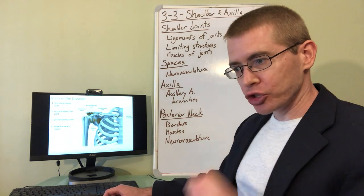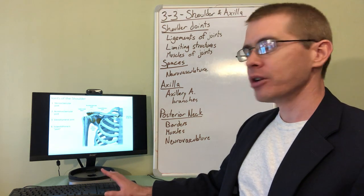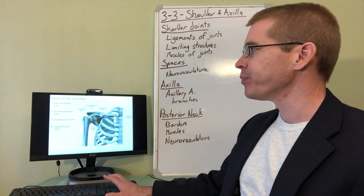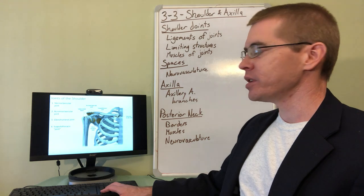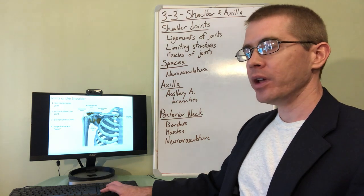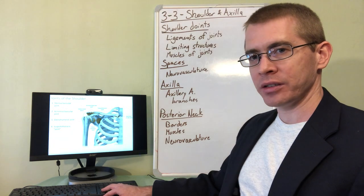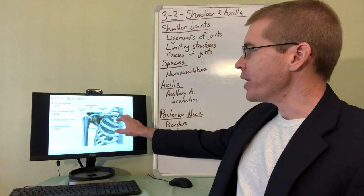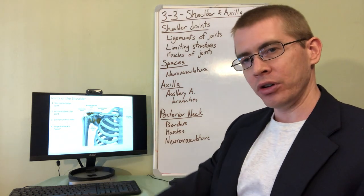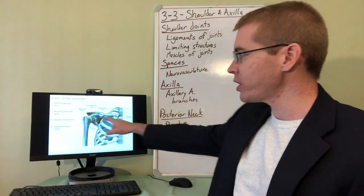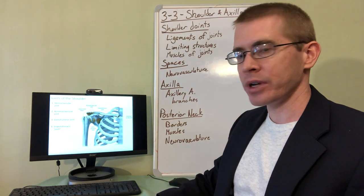So the shoulder has a number of joints to it. It's not just the glenohumeral joint, which we think of primarily, but there are two or three other joints. The sternoclavicular joint is actually the only point at which the upper limb articulates with the axial skeleton. That's why clavicular fractures are so common with falls with outstretched arms, because all of the force of that fall has to go through the clavicle because that's the connection point to the rest of the body.